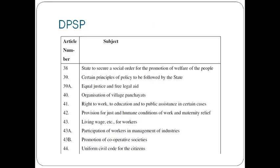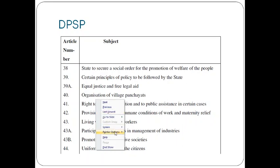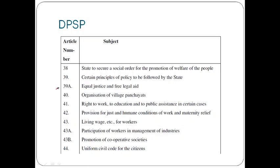Let us quickly go through the different articles of DPSP. Article 38 is about the state securing a social order for the promotion of welfare of the people. Article 39 is certain principles of policy to be followed by the state. Article 39A is equal justice and free legal aid. Article 40 is the organization of village panchayats. Article 41 is the right to work, to education, and to public assistance in certain cases.